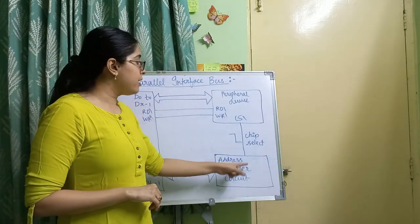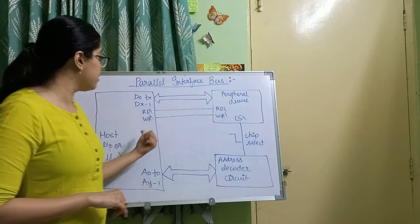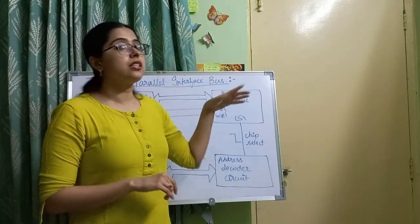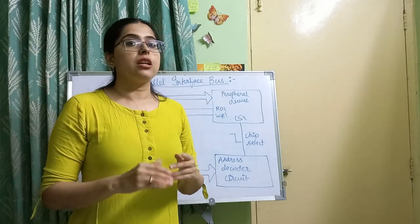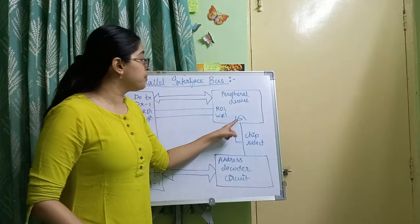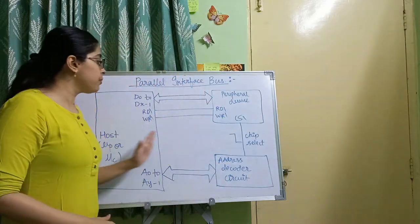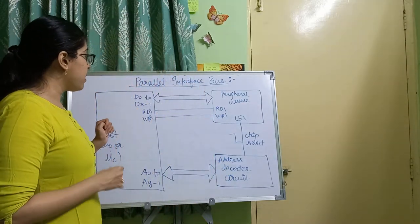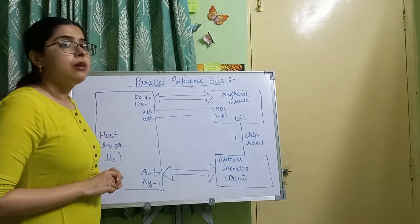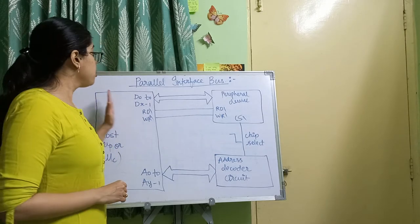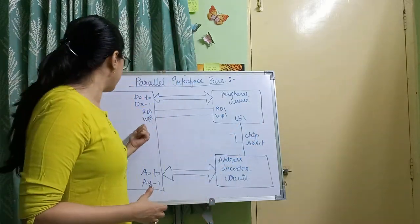The address decoder circuit asserts the chip select line active high. When the chip select line is asserted by the host processor, the peripheral device becomes active, and communication is initiated only after the chip select line becomes active. All communication is host-initiated — it is always the microprocessor or microcontroller that initiates communication.